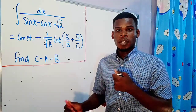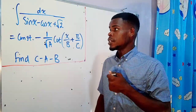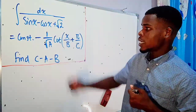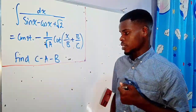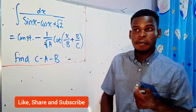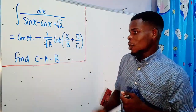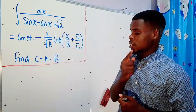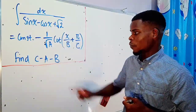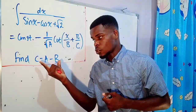Welcome to my channel. In this video we want to find c minus a minus b, given that the integral of 1 over sine of x minus cosine of x plus the square root of 2 dx equals an arbitrary constant minus a certain term. This question is from the JEE Main indefinite integral section. We first need to find what a, b, and c are, then compute the required expression.